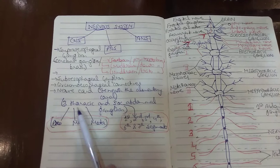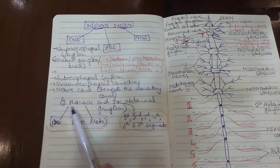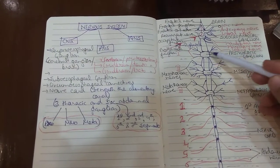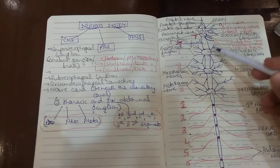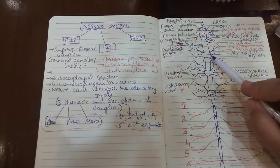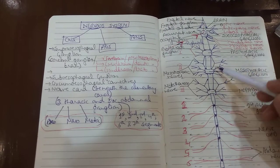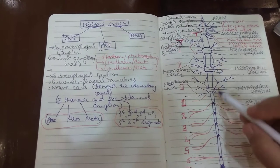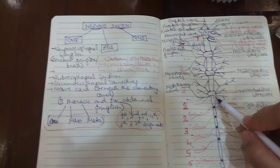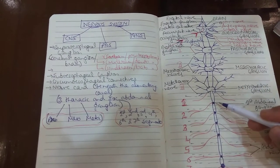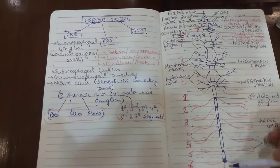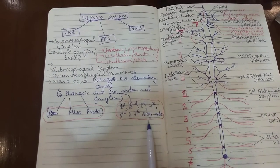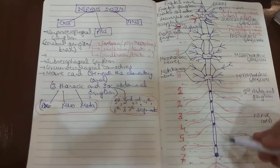Of the nine ganglia — three thoracic and six abdominal — the three thoracic ganglia lie in each of the thorax segments: the prothorax, mesothorax, and metathorax. The ganglion in the prothorax segment is the prothoracic ganglion, the one in the mesothorax is the mesothoracic ganglion, and the one in the metathorax is the metathoracic ganglion. The six abdominal ganglia lie in the first, second, third, fourth, sixth and seventh segments.